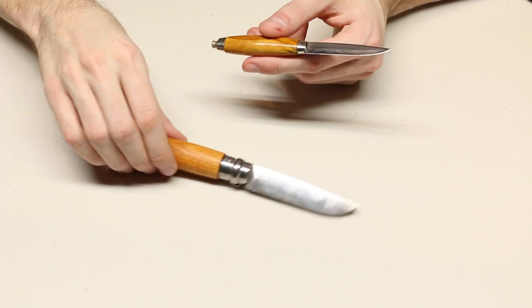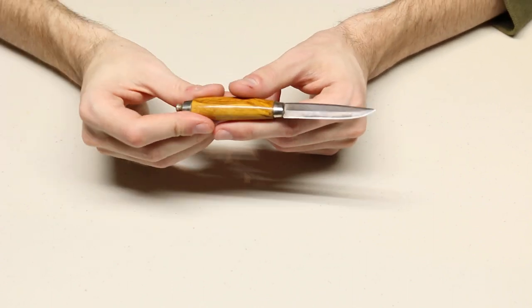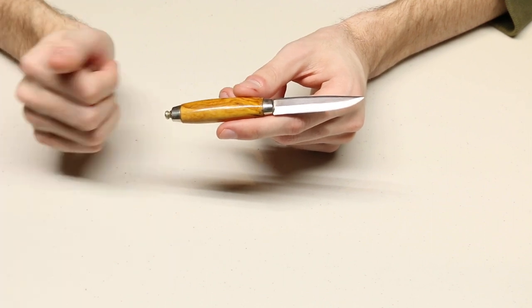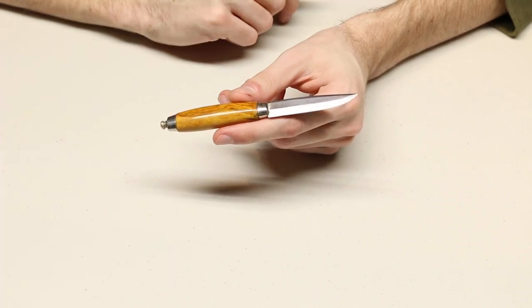Mora, their smallest knife they're producing currently, I believe is called the Eldris, which has a large stubby handle that I'm not really a fan of, and then a large stubby blade.